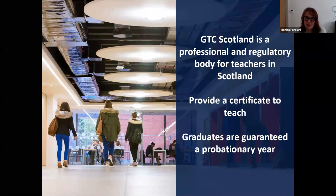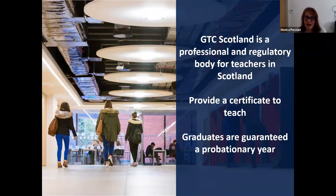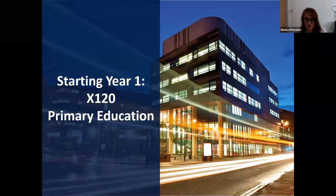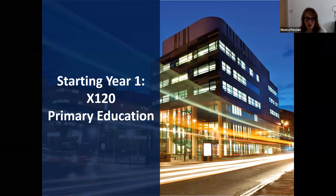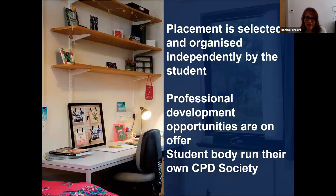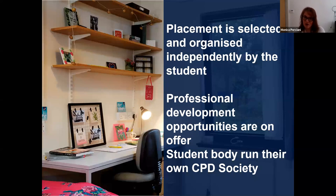Once students graduate at the end of fourth year, they're guaranteed what we call an induction year or probationary year — one year teaching as a probationary teacher is guaranteed as part of the course and our agreement with the General Teaching Council. In September, our new intake of first years will start. The UCAS code is X120. Primary education students can expect a number of things to happen across all four years of the course.